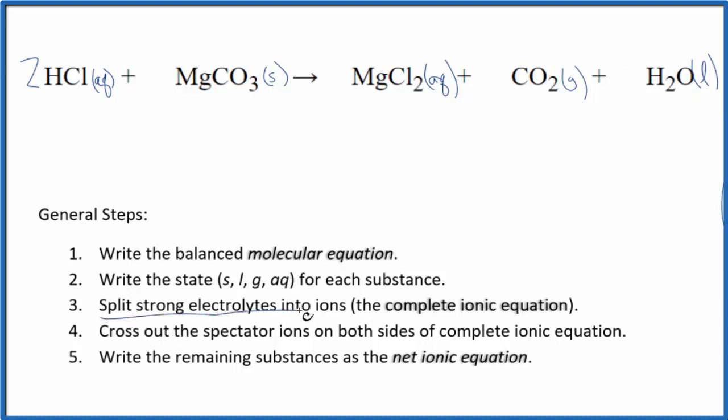Now we can split the strong electrolytes into their ions, and this will give us the complete ionic equation. So HCl, hydrogen is 1 plus on the periodic table, chlorine is 1 minus. So we have two hydrogen ions, 2H plus. I'll write the states at the end. Two chloride ions.